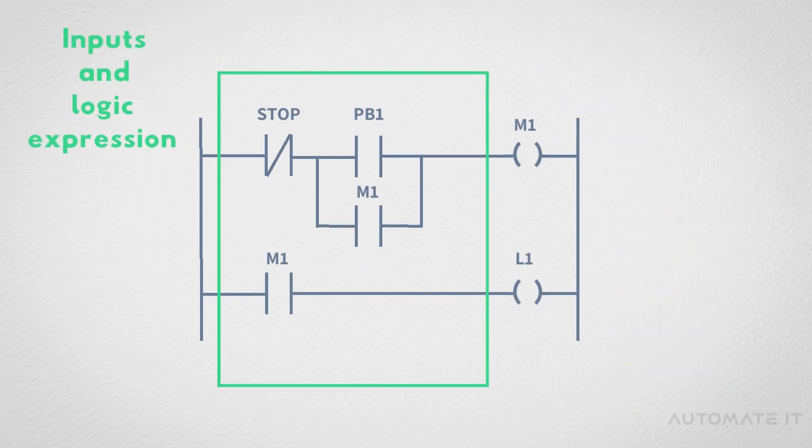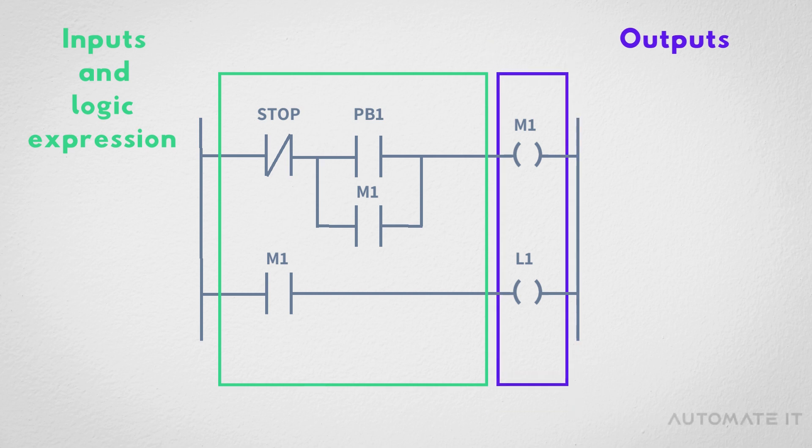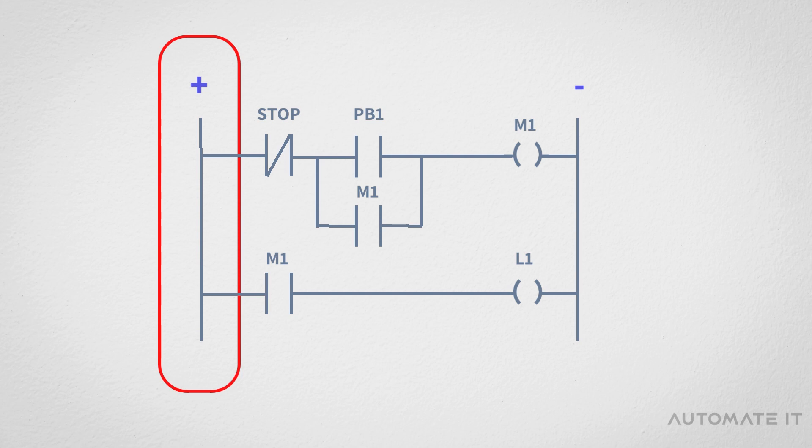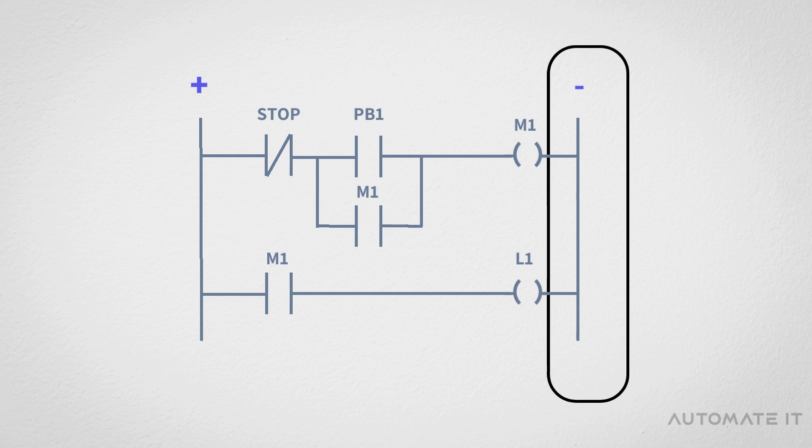At the left side of each rung, there are inputs and logic expressions, and in the right side there are outputs. Ladder logic looks very similar to electrical relay circuits. We can consider the left side to be the positive rail and the right side to be the reference voltage or zero voltage, so the power will flow from left to right.